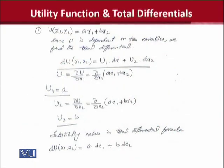In this case, we have taken an example, a certain utility function that is dependent upon two goods, x1 and x2, with the specific form ax1 plus bx2. You can see that there are two independent variables that determine the level of utility.